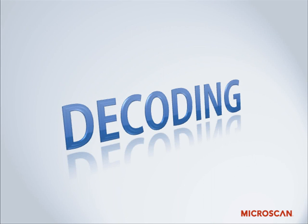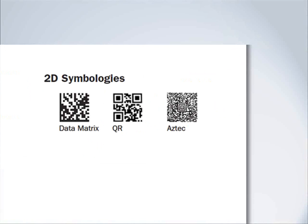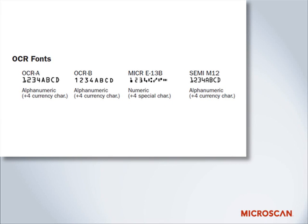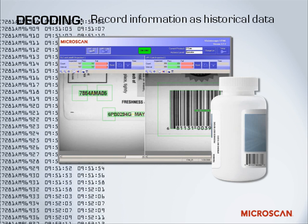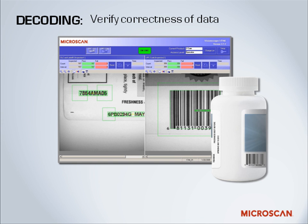Decoding refers to the decoding of 1D and 2D symbologies, such as linear barcodes, stacked symbologies, and 2D symbologies such as data matrix codes. This also refers to OCR, or Optical Character Recognition, which is text that is simultaneously human and machine readable. Decoding is typically used to record information as historical data, giving you a record of parts that have gone through a process. You can track the path a part took through that process, use the data for immediate action, sort based on what it says, and validate the data for correctness — verifying that the data in the mark is correct, that the format is correct, or that you have the correct product going down the line.